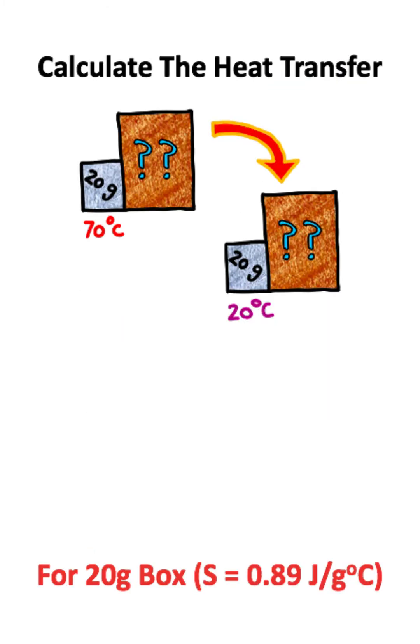An aluminum block with a mass of 20 grams comes into contact with some sort of unknown metal. The block starts at a temperature of 70 degrees Celsius and finishes at a temperature of 20 degrees Celsius. How much heat was transferred from the aluminum block to the unknown metal if we ignore any heat lost to the environment?